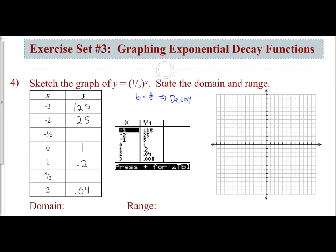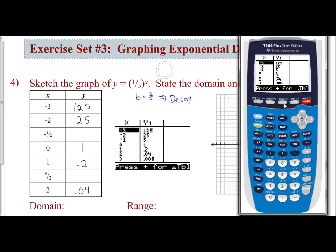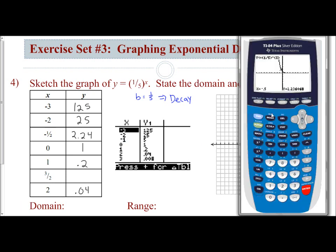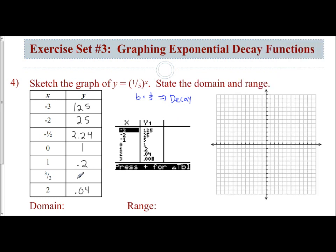Now there's multiple ways you can do this. One quick way is to hit the calculate menu, second trace. You want to calculate a value on your graph, so I can hit value. It's going to ask me to input my x, which is negative 1 half. So negative 0.5. And I get 2.236, so I'm going to get 2.24. I can do the same thing for 3 halves. Second calc value. 3 divided by 2. And I'm at 0.089. So I can write down 0.09.